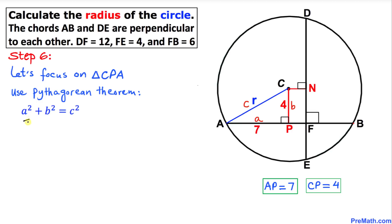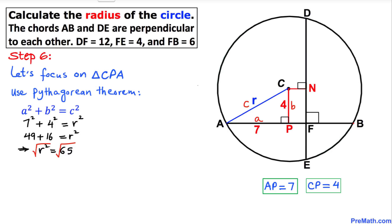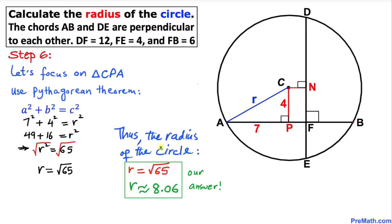Filling in the values: 7² plus 4² equals r², which simplifies to 49 plus 16 equals r², so r² equals 65. Taking the square root of both sides, r equals the square root of 65. Therefore the radius of our circle is √65, or approximately 8.06. Thanks for watching, and please don't forget to subscribe to my channel for more exciting videos!